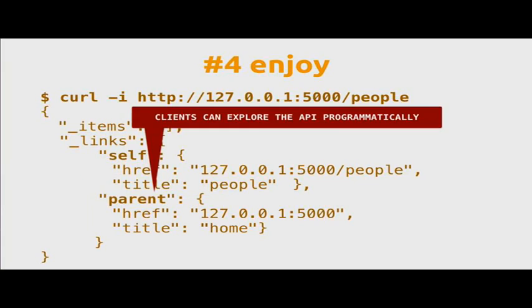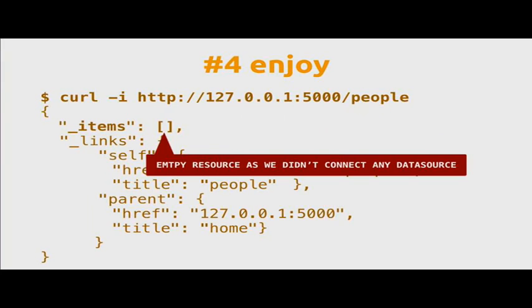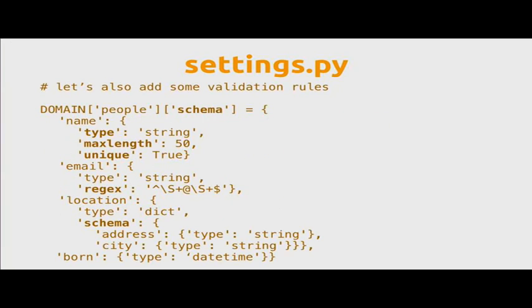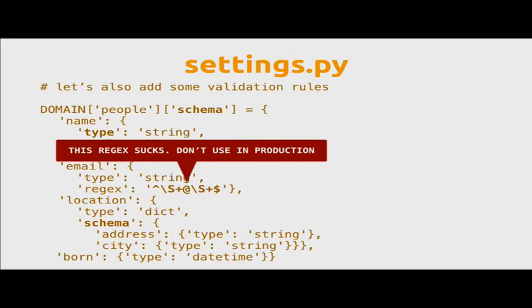You can turn this feature off if you want. Let's connect the database now — very simple. While we're here, let's also define some schema for our endpoint. We're defining a few fields with data types and validation rules. The name field is a string with a max length and is unique. The email field is a string and we can set a regex for validation — don't use this regex in production, but just to give you an idea. You can even nest dictionaries within dictionaries, lists within dictionaries, and so on.